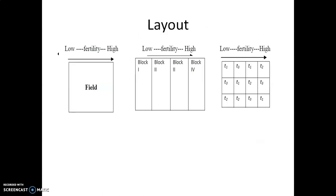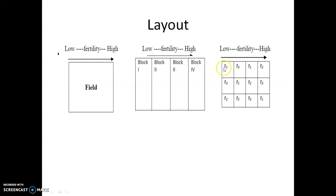We will see the layout of this particular RBD. In this layout, we have a field. Almost all fields are heterogeneous in nature — we have a low fertility to high fertility gradient. So we cannot directly treat the field as homogeneous. We need to divide it into blocks. Each particular block is a homogeneous element. This complete field is divided into different blocks, and we then allocate the treatments randomly. This is the RBD layout.